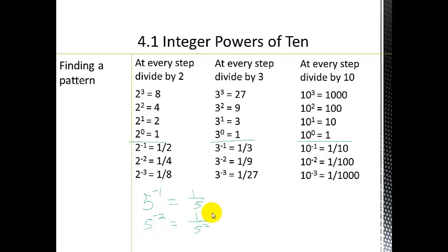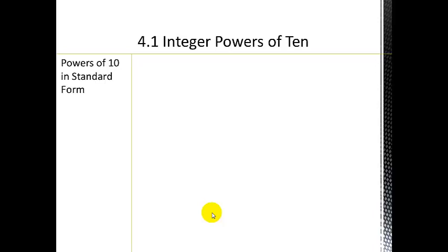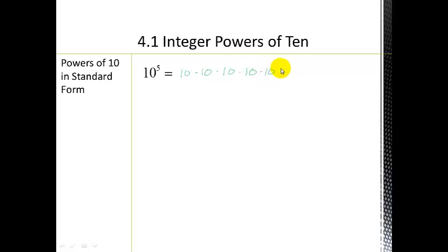Let's write these in standard form — you can think of it as expanded form. 10 to the fifth power is 10 times 10 times 10 times 10 times 10. The great thing about multiplying by 10 is you know it's going to be a 1 followed by zeros: 1, 2, 3, 4, 5 zeros. So 10 to the fifth is 100,000.